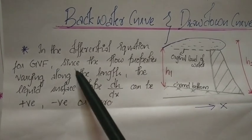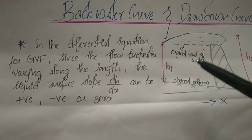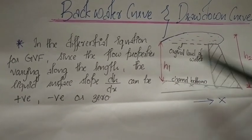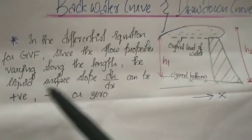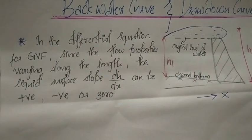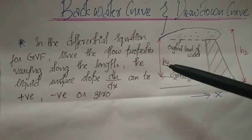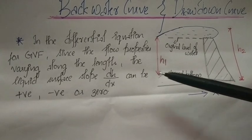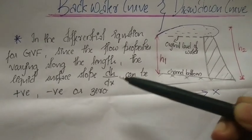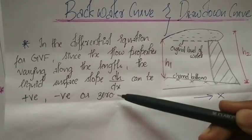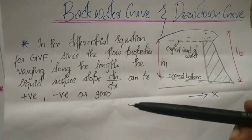In gradually varied flow, the flow properties change along the length. The change in flow properties is represented by dh/dx, which is the change in water surface height with respect to distance. dh/dx can be positive, negative, or zero.